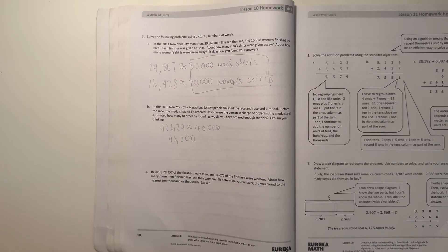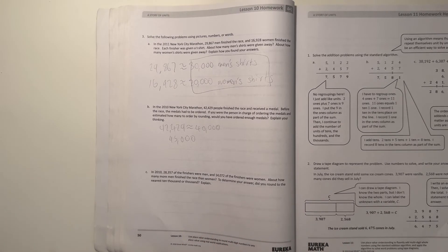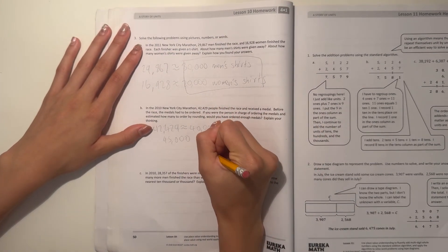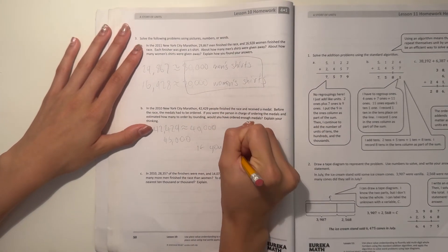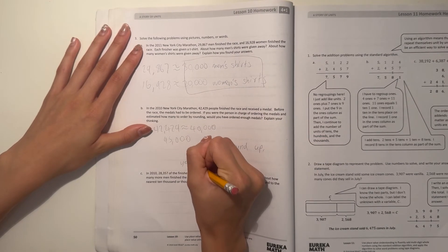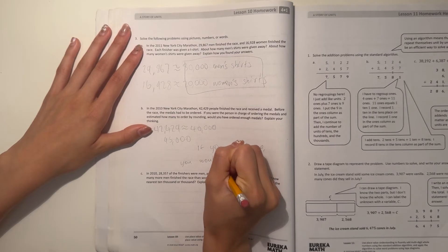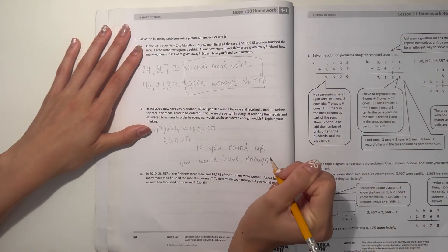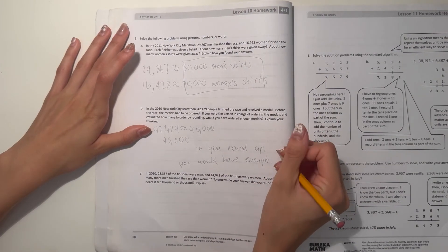And so I would have had enough if I rounded it up. So it's basically depending if you round it up or round it down, because if you round it down you wouldn't have enough. But if you round it up then you would have enough.